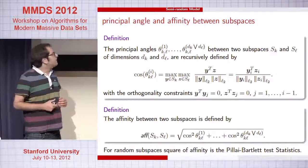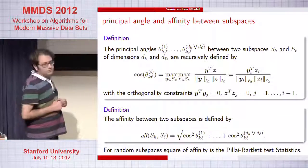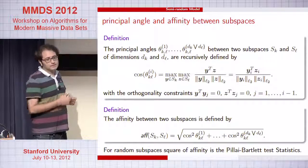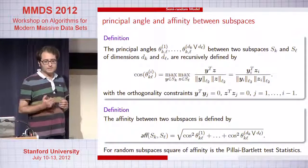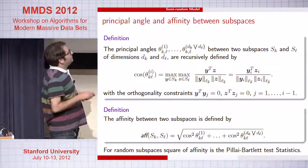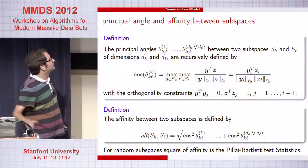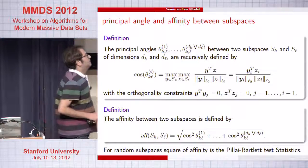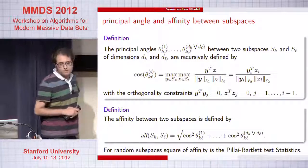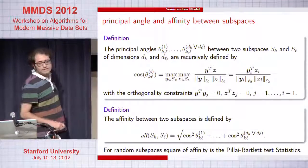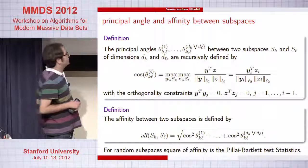If you want to understand any subspace clustering algorithm, it will have difficulty when subspaces are really close. The measure we use is the square root of the sum of cosines squared of the principal angles. If the two subspaces are on top of each other, these principal angles vanish, so this quantity becomes large — as large as square root of d. If the subspaces are orthogonal to each other, all principal angles become 90 degrees and this quantity becomes zero. So this matches our notion of closeness between two subspaces.